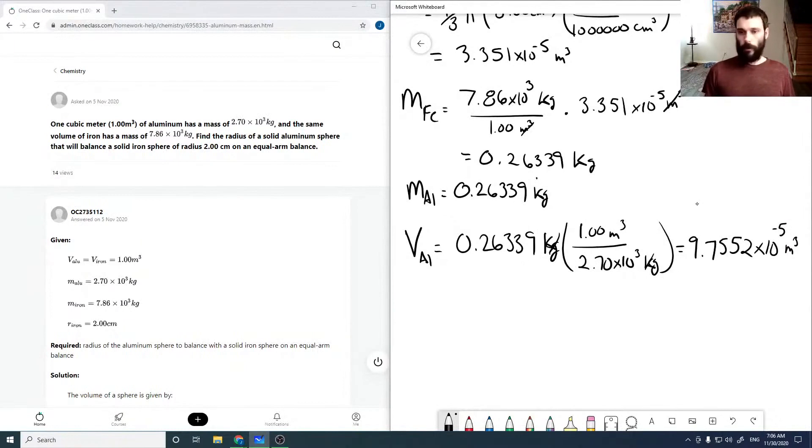And now with our sphere equation, we can solve for r. So v equals 4 thirds pi r cubed. So that means that r cubed is 3v over 4 pi.